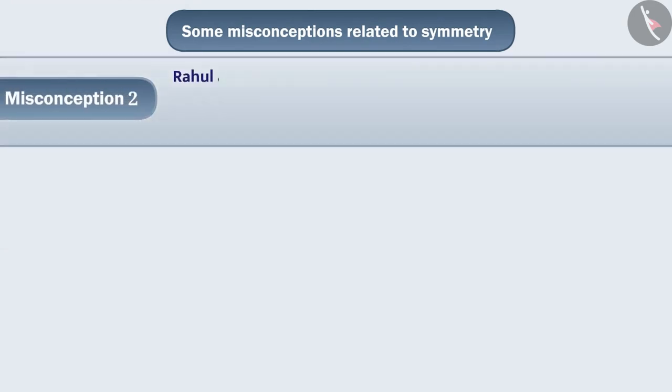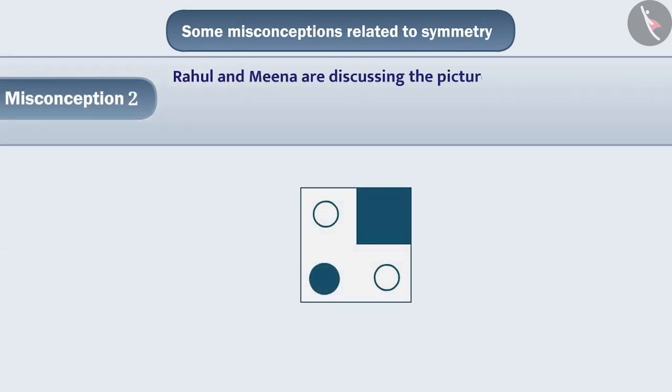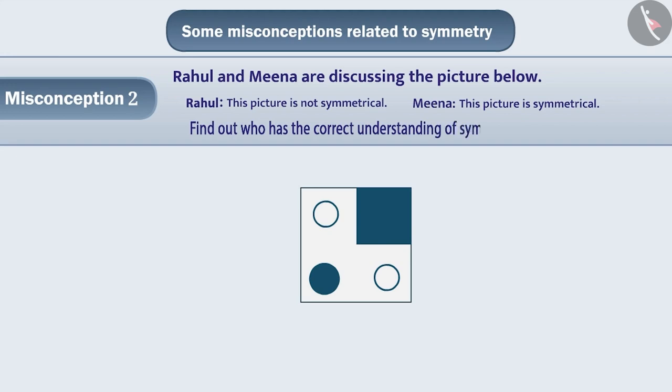Misconception 2: Rahul and Meena are discussing the picture below. Rahul was saying that this picture is not symmetric, while Meena believed that this picture is symmetrical. Find out who has the correct understanding of symmetry.